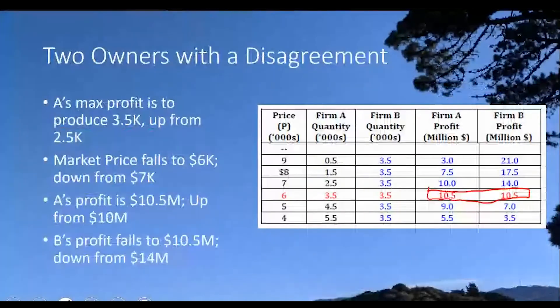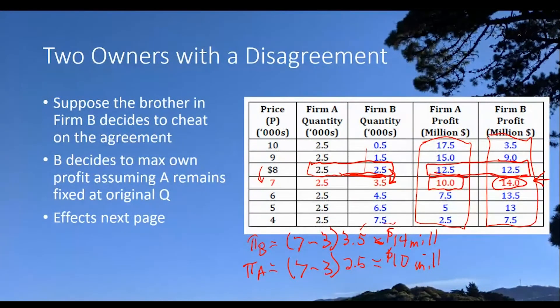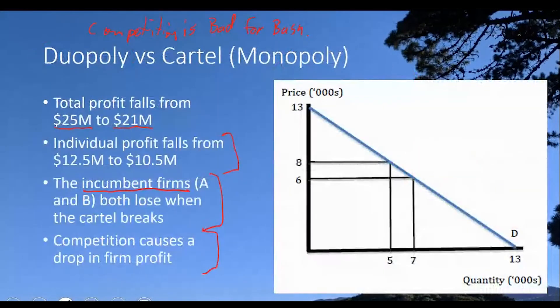And where do those numbers come from? Well, they come from this figure back up here. The 2.5 and the 2.5, 12.5 and 12.5. So we're getting the numbers from the example that we used before.